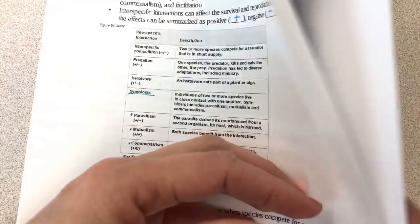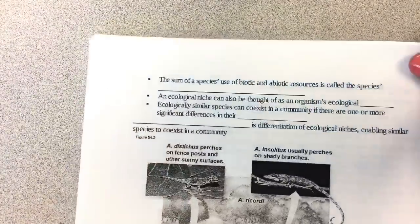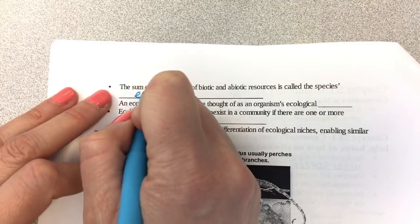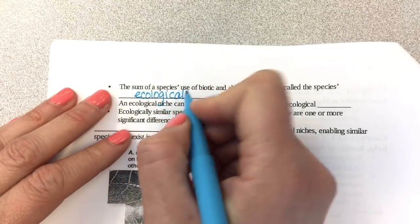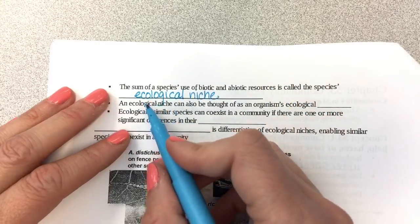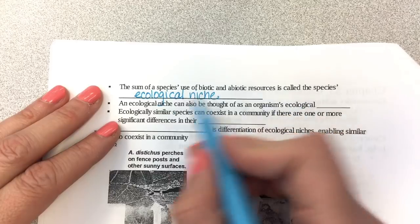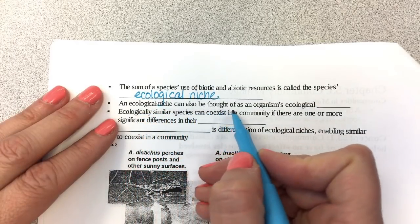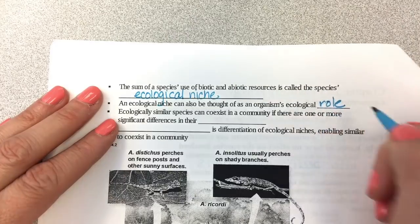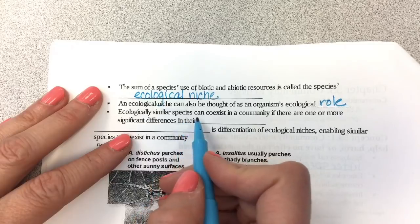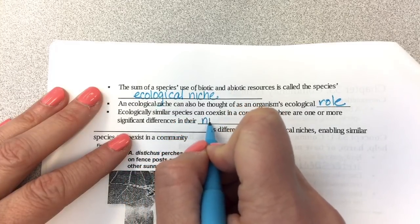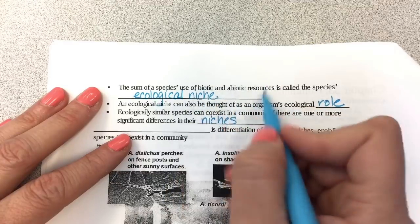An example of this involves ecological niches and natural selection. The sum of a species' use of biotic and abiotic resources is called its ecological niche — how it uses all its resources, both living and non-living, for food, building a nest, or living space. An ecological niche can also be thought of as an organism's ecological role in the community. Ecologically similar species can coexist if there are one or more significant differences in their niches.